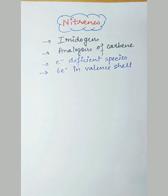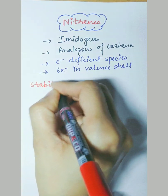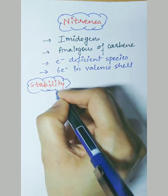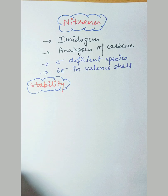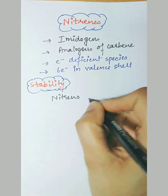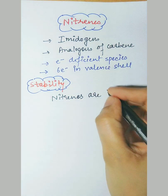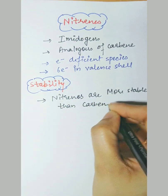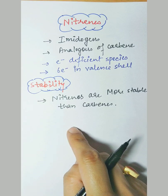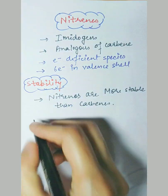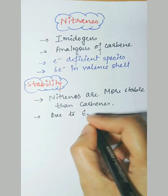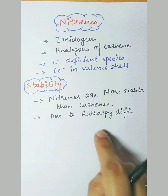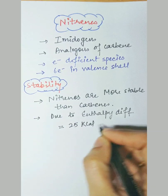Now we will talk about stability — which one is more stable, nitrines or carbenes? Nitrines are more stable than carbenes. Experimentally it has been confirmed that nitrines are more stable than carbenes, and this stability is due to an enthalpy difference between nitrines and carbenes that is equal to 25 kilocalories per mole, which makes nitrines more stable.